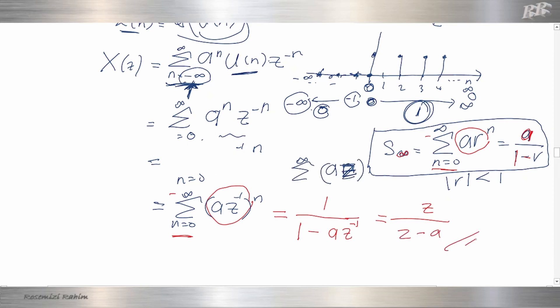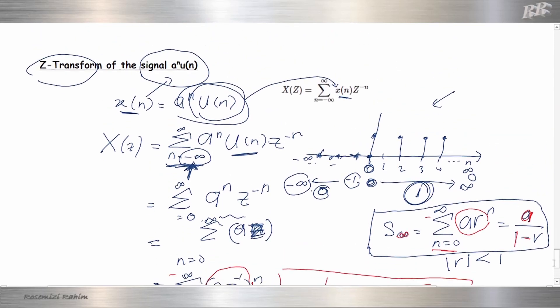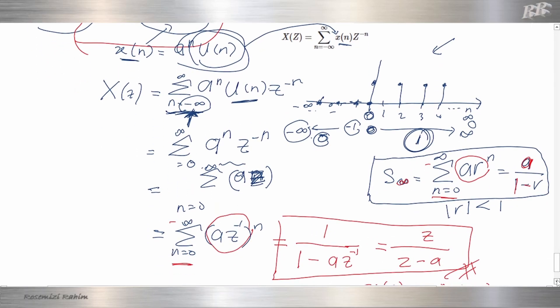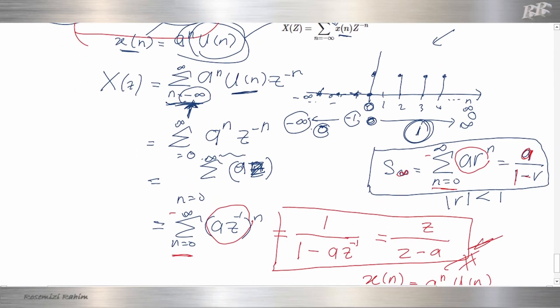This is the equation for Z-transform of x(n) equal to a^n u(n). The Z-transform for function of a to the power of n times u(n), Z-transform of the signal a^n u(n). That's all, thank you, bye-bye.